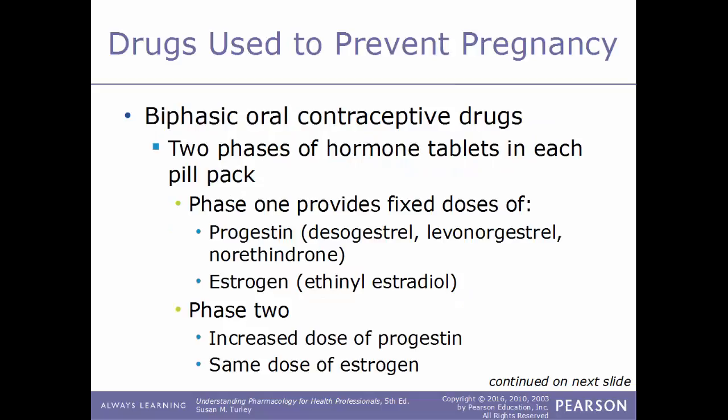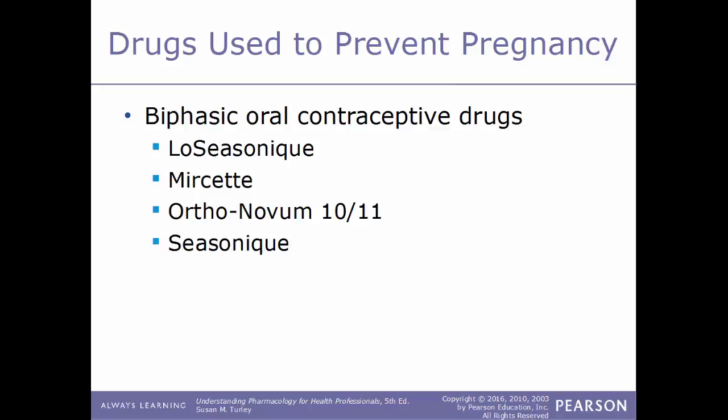Biphasic drugs contain two phases of hormone tablets in each pill pack. Phase 1 provides a fixed dose of progestin and estrogen — examples of progestins include desogestrel, norethindrone, or levonorgestrel; an example of estrogen is ethinyl estradiol. In phase 2, the estrogen dose stays the same but there's an increased dose of progestins. Examples of biphasic contraceptive drugs include Lo Seasonique, Mircette, Ortho-Novum 10-11, and Seasonique.